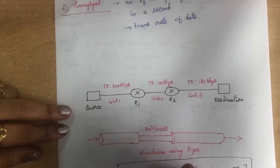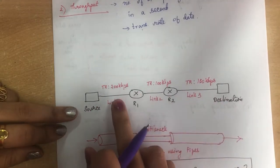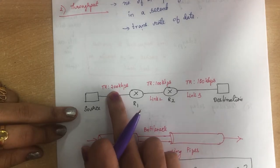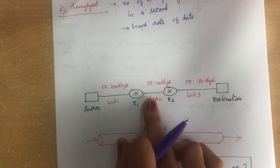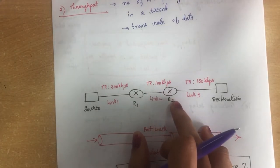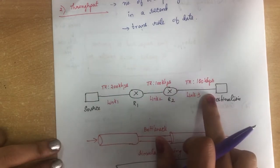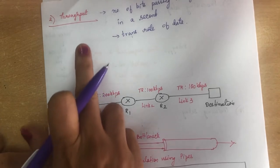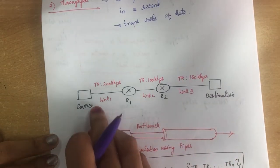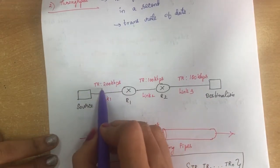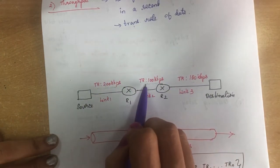Usually in a path there will be several links with different transmission rates. For example, between source and destination we have three links: one at 200 kbps, then a router sending at 100 kbps, and another router sending at 150 kbps. In this case, throughput is measured by the minimum of all transmission rates, which is 100 kbps.